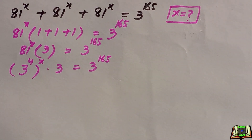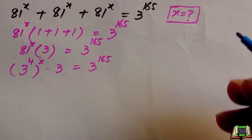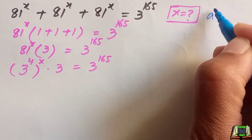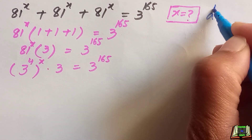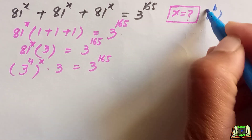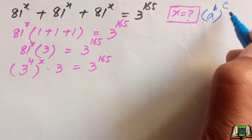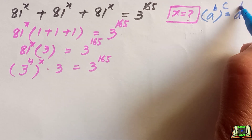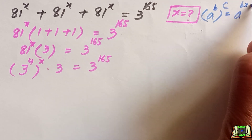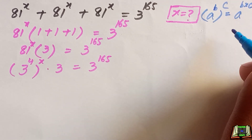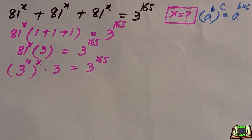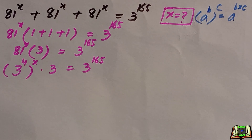Here we are going to use the power of a power rule, which says: if a raised to power b, raised to power c, then this equals a raised to power b times c. So we are going to multiply these two powers.